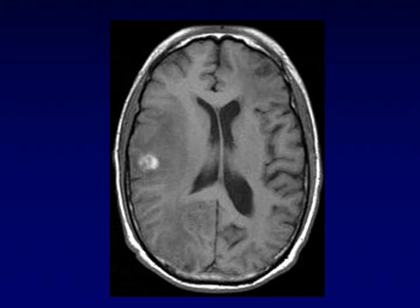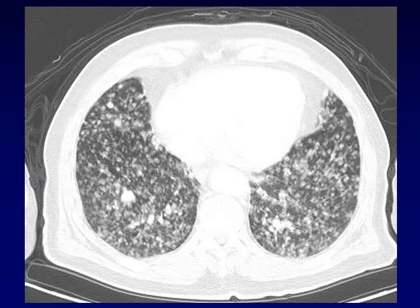Here is an example of metastatic disease from thyroid cancer to the brain. On this unenhanced image, the bright T1 signal represents hemorrhage, which is characteristic of thyroid cancer brain metastases. There is also a miliary form of hematogenous spread seen with differentiated thyroid cancer, with innumerable small metastatic deposits throughout the lungs — this belongs in the differential diagnosis with miliary TB.